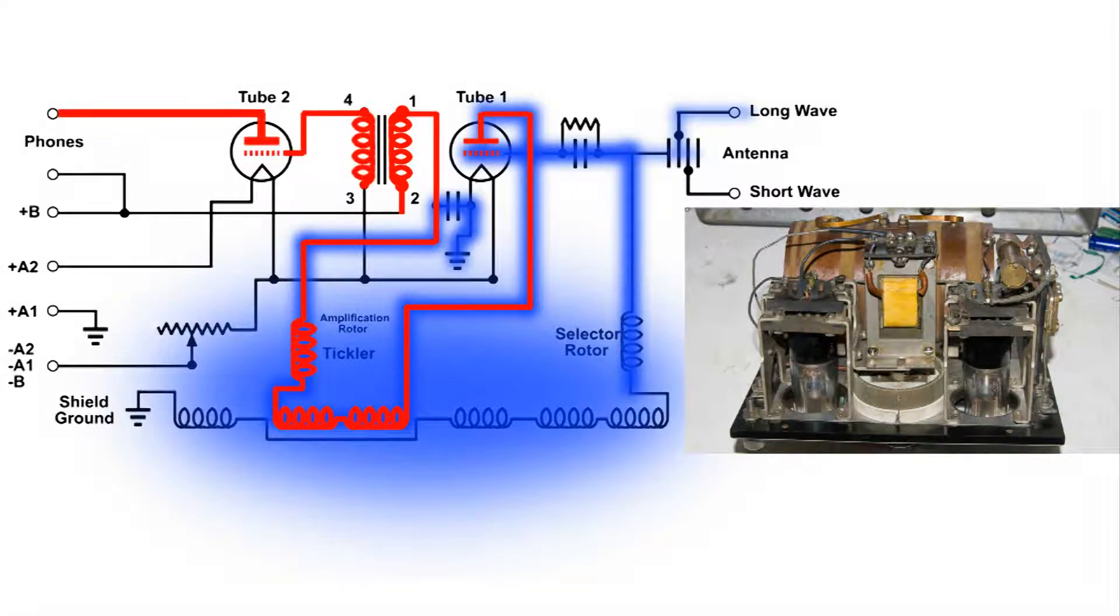Now this gets magnetically coupled to the next tube grid, where this second tube will amplify the audio signal.